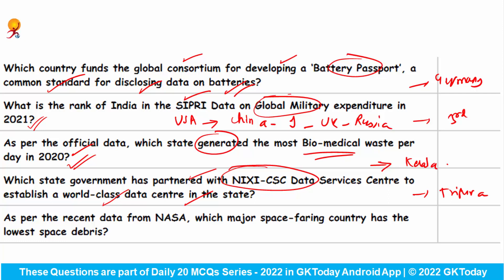As per recent data from NASA, which major space-faring country has the lowest space debris? This is India.